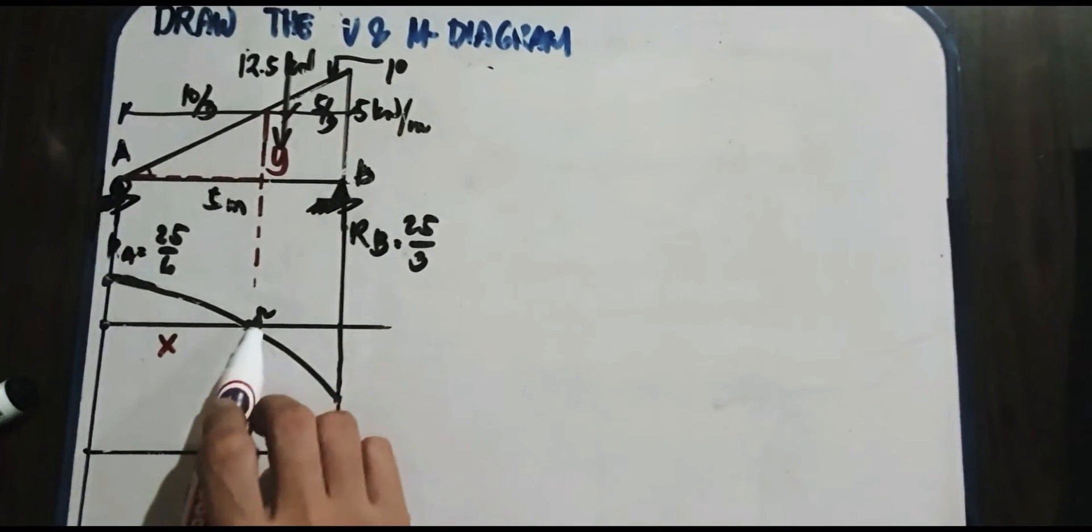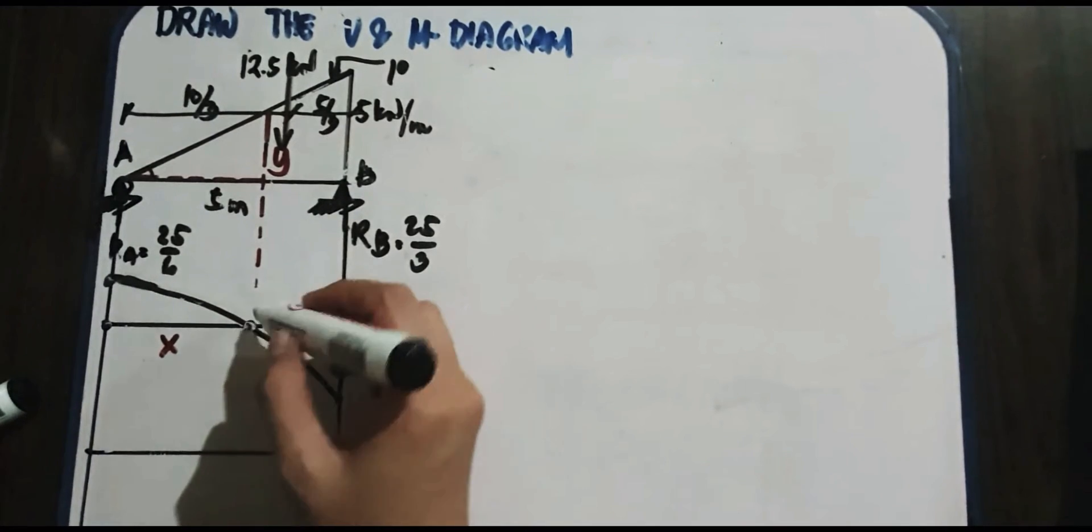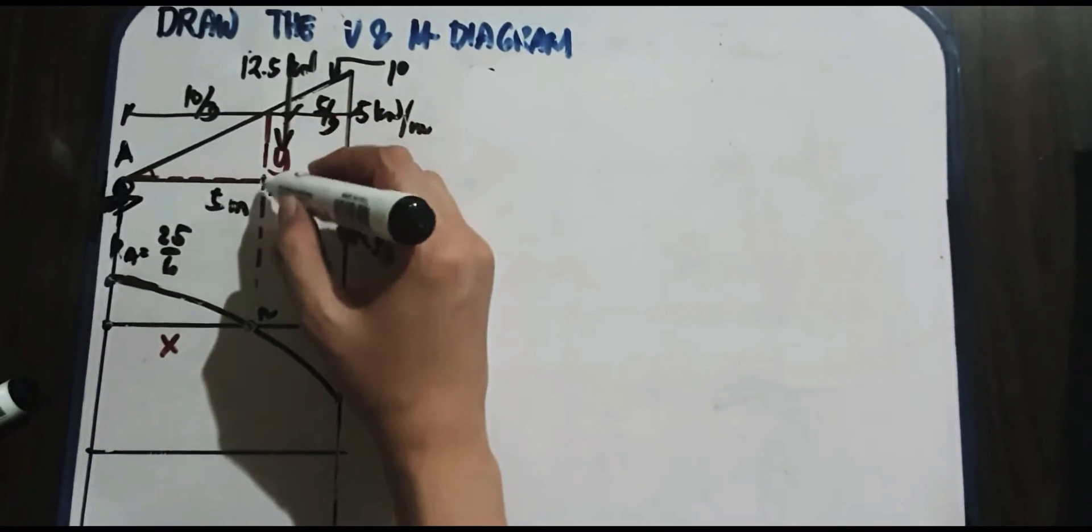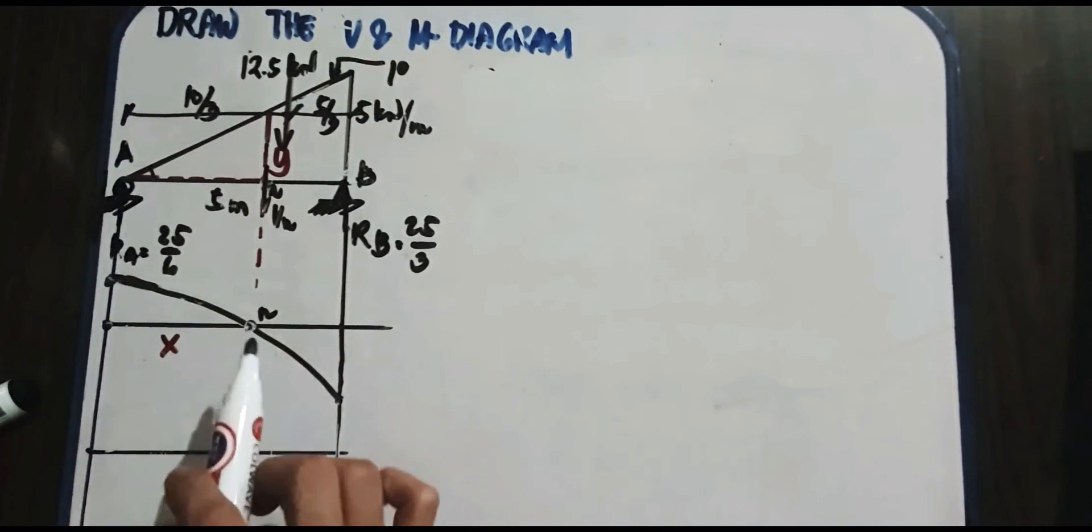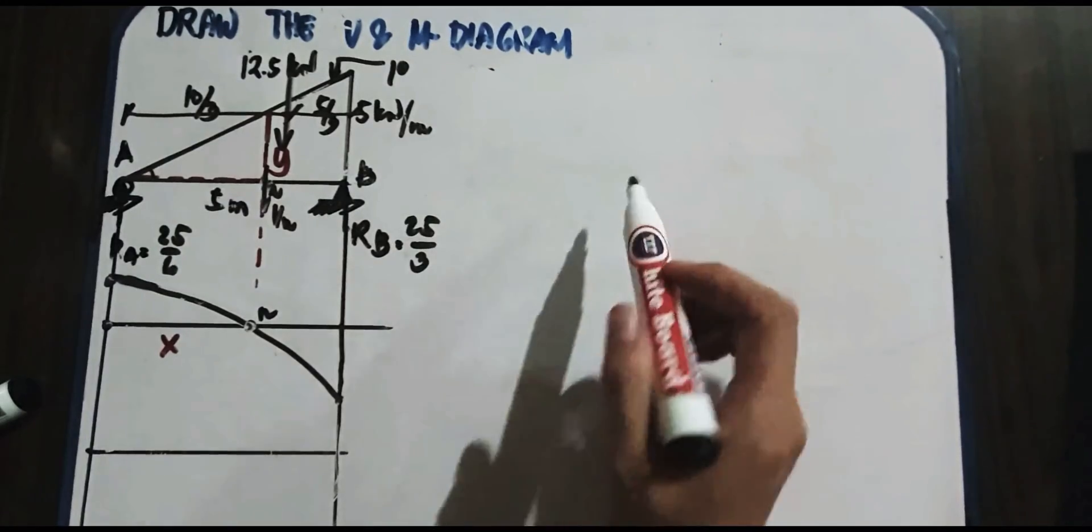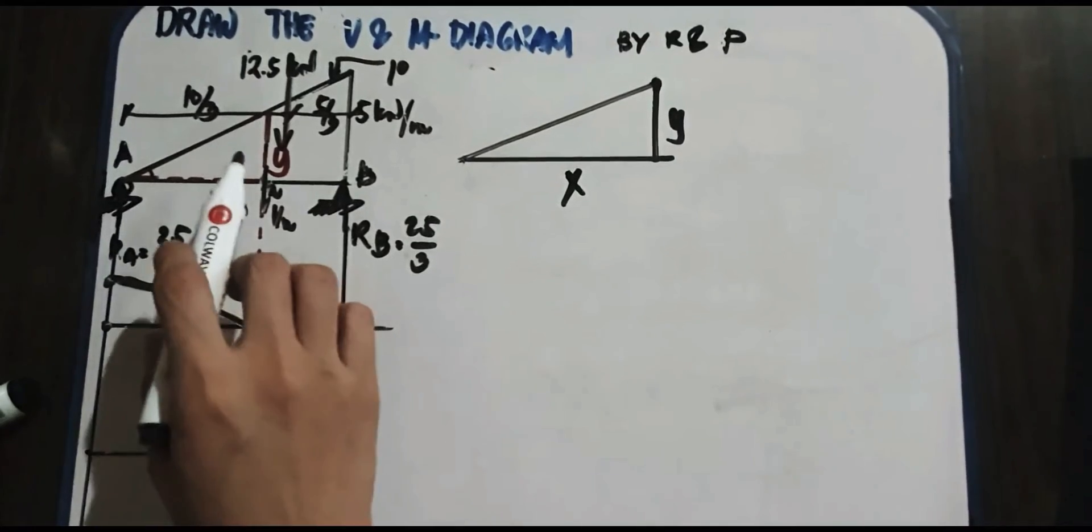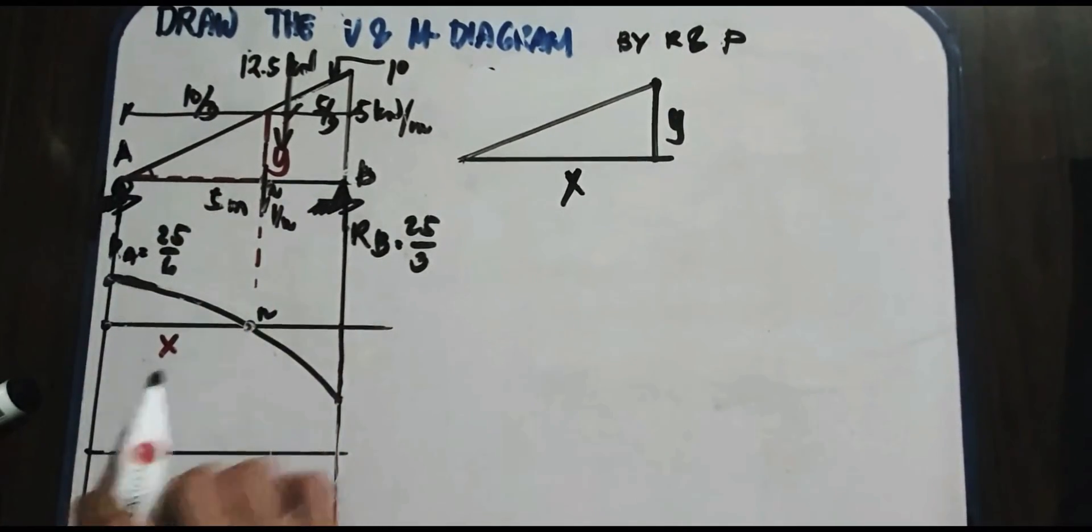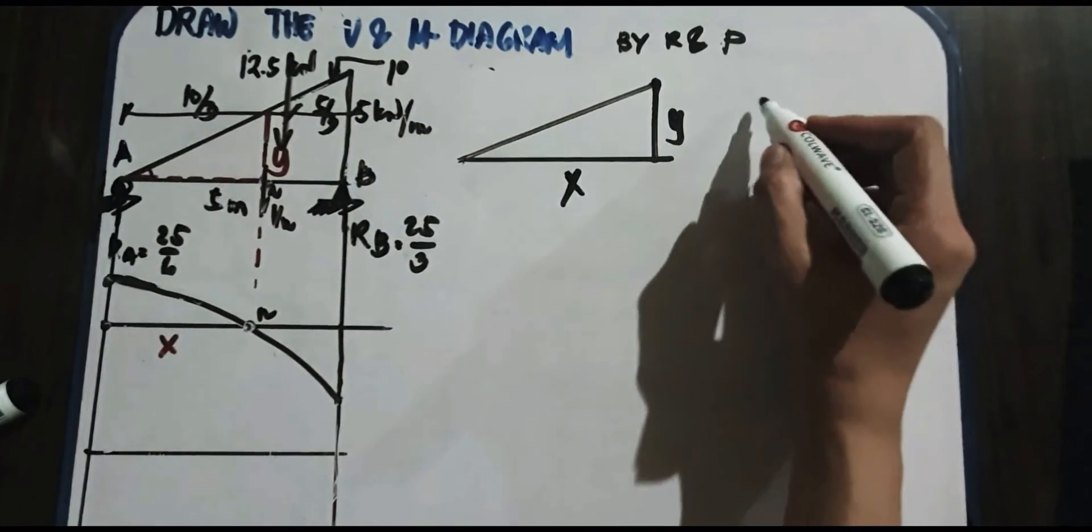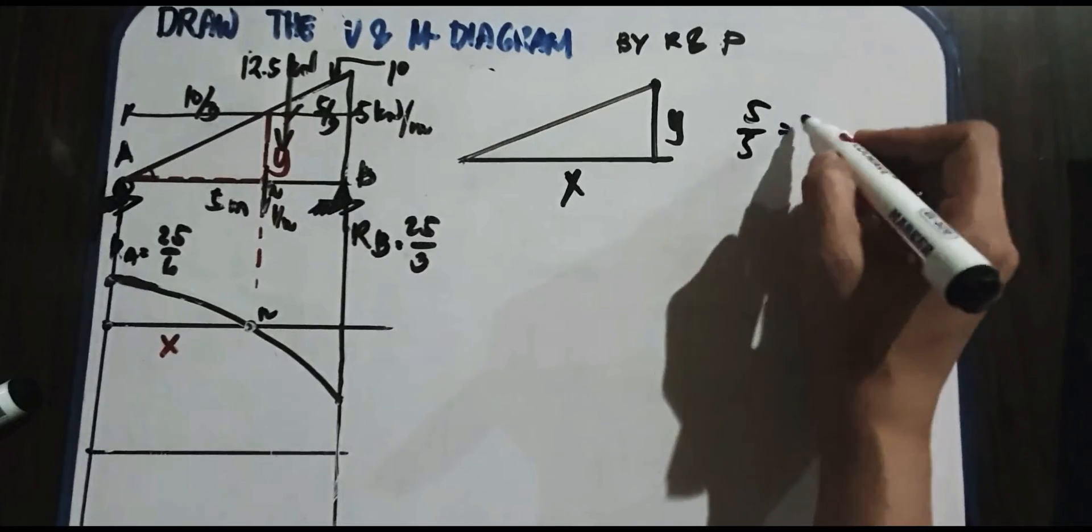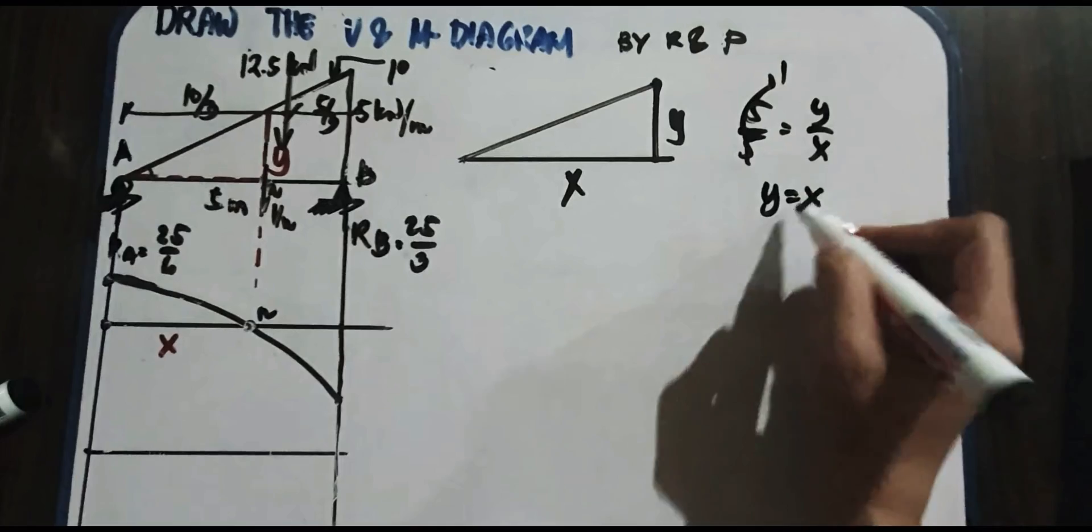So mapapansin nyo rito, we have your n. And then ito ay 0 shear. So ibig sabihin, i-plot natin hanggang dito, this will become your n. And therefore, kapag kinati ko yan, that is your shear n. And this is your x. So gawa tayo ng ratio and proportion para mahanap natin yung x. By ratio and proportion, in-isolate ko lang ito. We have y over x. So ibig sabihin, pag mag-ratio and proportion tayo, dito tayo sa big triangle. So we have 5 over 5 is equal to y over x. So that is equal to 1. So therefore, y is equal to x.